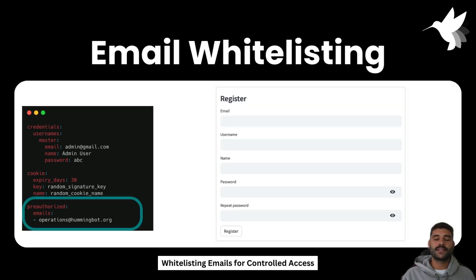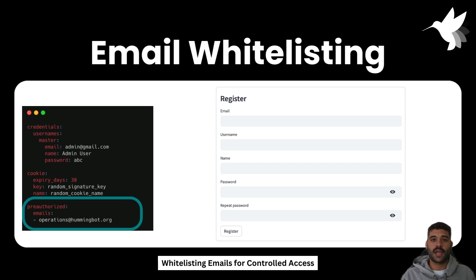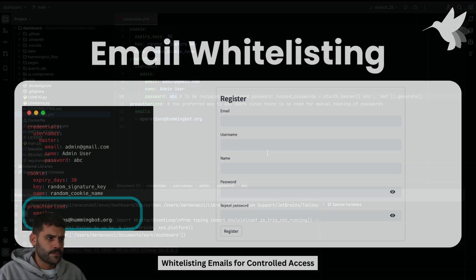The second method is simpler. We define a list of emails that are whitelisted to access the dashboard, and then those users just need to fill the registration form and log in for the first time. When this happens, the password will be hashed and stored in the YAML file that we are seeing on the screen.